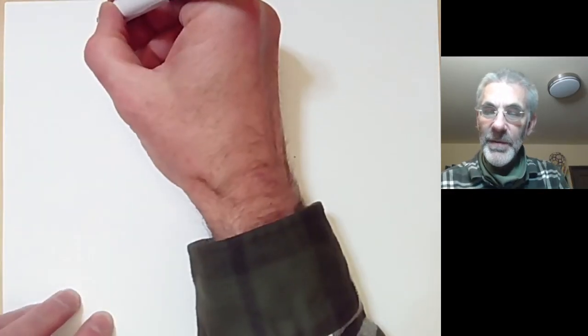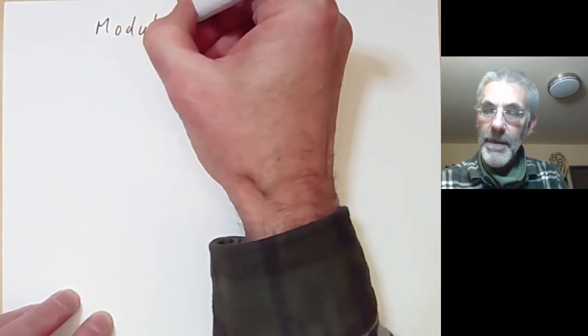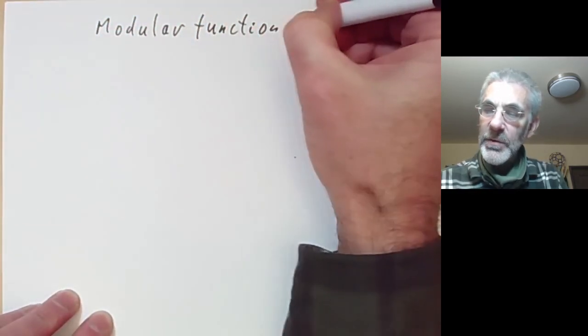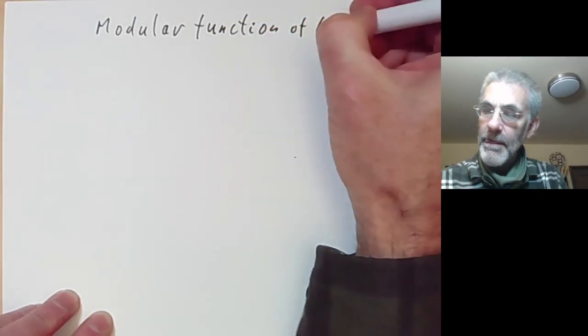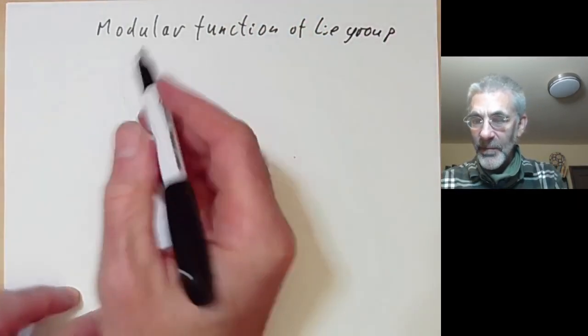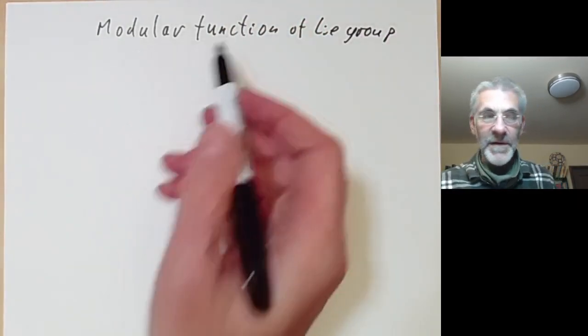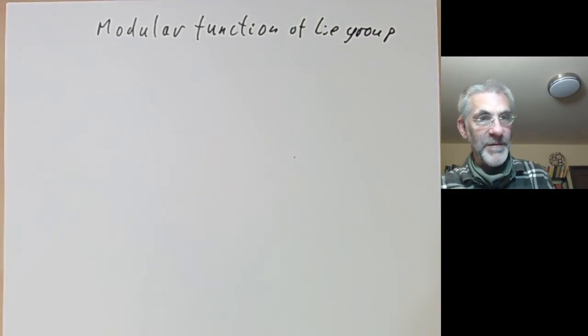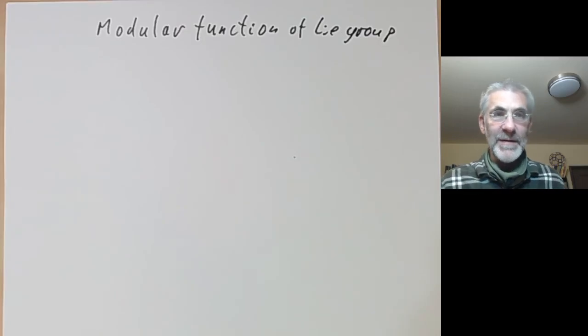This lecture is part of an online course on Lie groups and will be about the modular function of a Lie group. I should just start by explaining that the modular function of a Lie group has very little to do with the modular functions that you get in the theory of modular forms — they're just completely different objects.